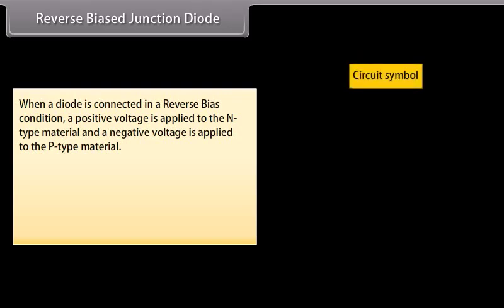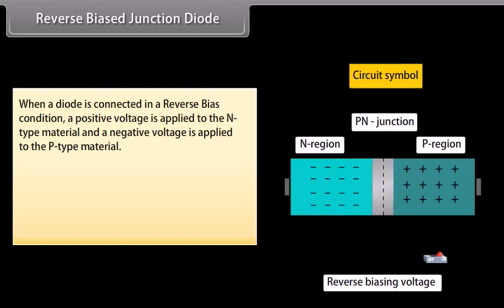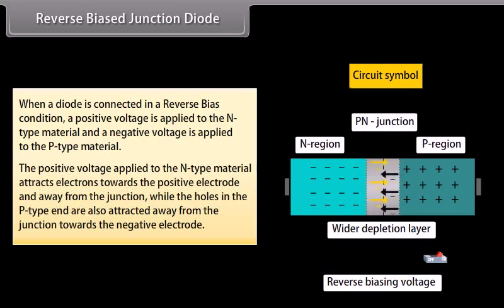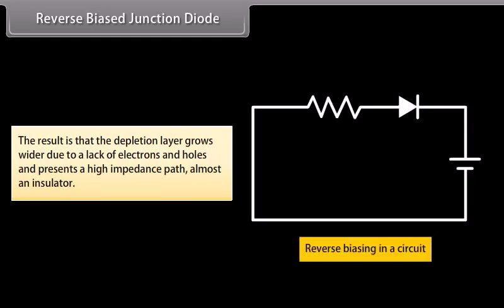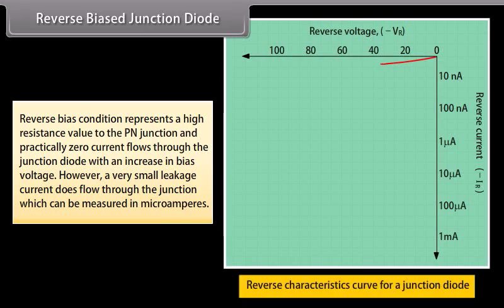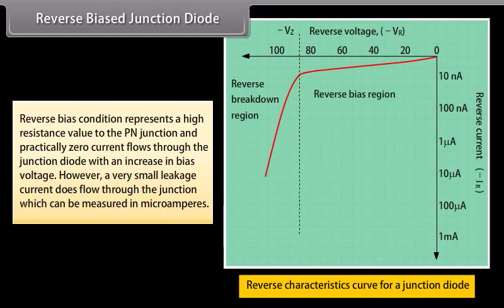When a diode is connected in a reverse biased condition, a positive voltage is applied to the N-type material and a negative voltage to the P-type material. The positive voltage attracts electrons away from the junction, while holes in the P-type end are also attracted away towards the negative electrode. The result is that the depletion layer grows wider, presenting a high impedance path — almost an insulator. Reverse bias represents a high resistance value of the P-N junction and practically zero current flows through the junction diode. With an increase in bias voltage, a very small leakage current does flow through the junction, measurable in microamperes.